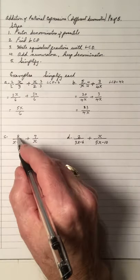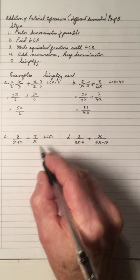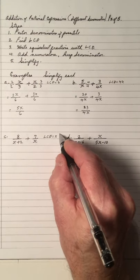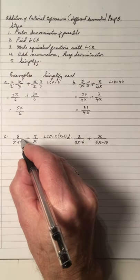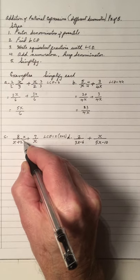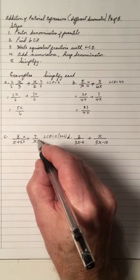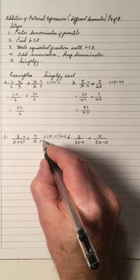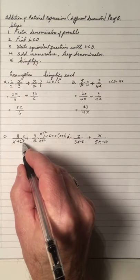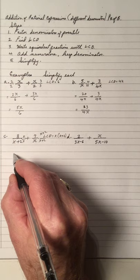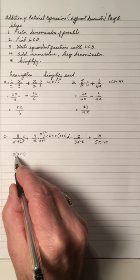Example C: I have 8 over x plus 2, added to 7 over x. I need to find the LCD. The LCD must have both x and x plus 2 — those are two different denominators. So I multiply the first fraction by x over x, and the second fraction by (x+2) over (x+2) to get equivalent fractions. In the denominator, I leave it as x times (x+2) — I do not multiply it out.